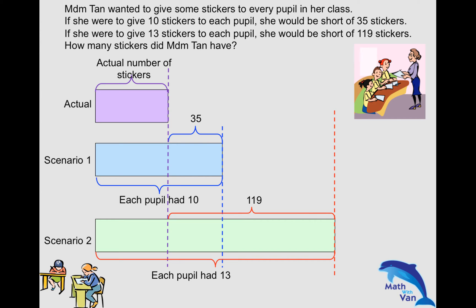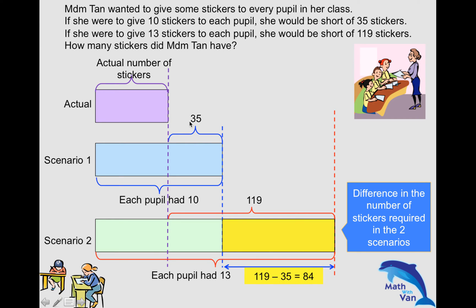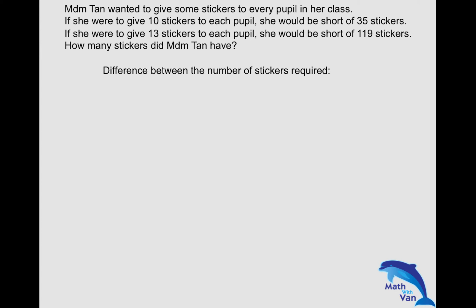So from the model, we can work out easily because we have written on the information. The difference is actually this yellow portion, which is 119 stickers take away 35. So this is the difference. So let's put everything in number sentence. So the first one is 119 take away 35, we have the 84. So 84 is the total number of extra stickers that Madame Tan needed so that each pupil will get 13 stickers instead of 10 stickers.